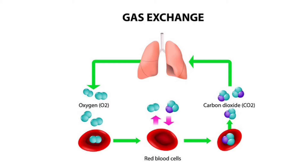This image illustrates how oxygen inhaled into the lungs is picked up by hemoglobins, which are oxygen-binding proteins inside red blood cells. At the same time, hemoglobins release carbon dioxide into the lungs to be exhaled. The oxygen bound to hemoglobins is transported throughout the human body via the blood circulation.